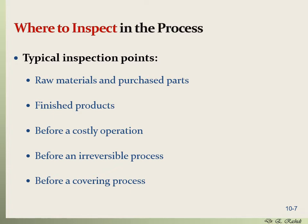Another inspection point is before an irreversible process. If there is something wrong with a product going through an irreversible process, you want to fix it beforehand if it's fixable — otherwise you've performed an irreversible process on a defective product and cannot fix it. Another inspection point is before a covering process, because the covering process will cover the product, making it difficult or impossible to inspect the quality of what is underneath.